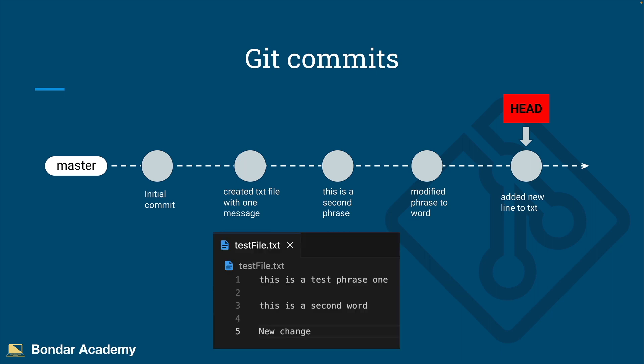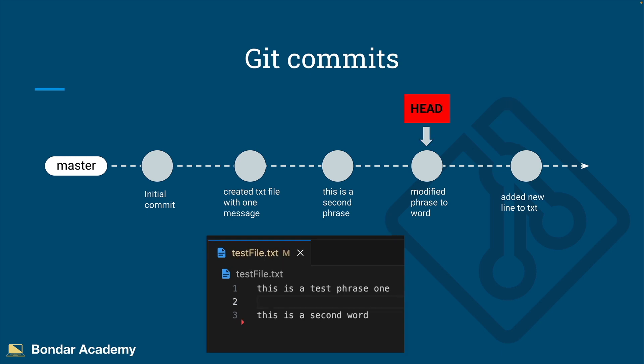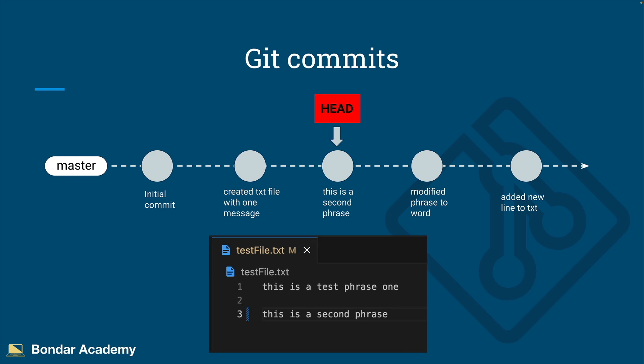If we take this example with testfile.txt, if we move our HEAD a little bit to the left, this is what the text file will look like. Or if we move HEAD one commit before that, this is what the commit will look like — this is the test phrase and this is the second phrase. This is the place where we changed 'phrase' to 'word' between those commits.